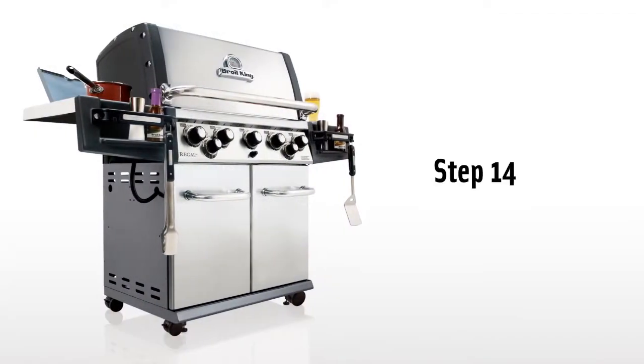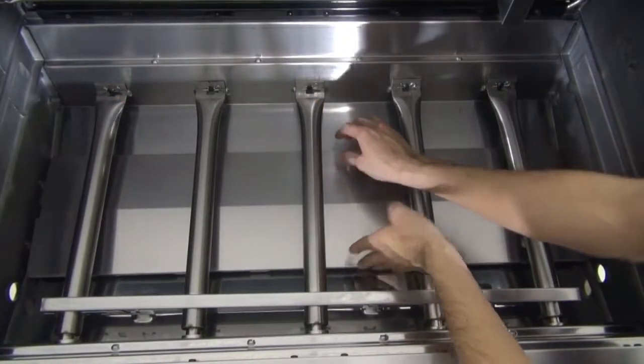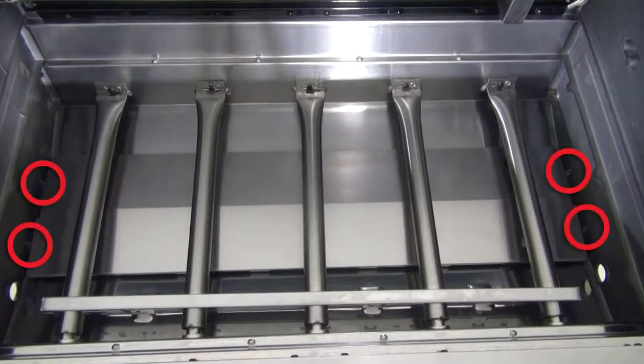Step 14. Double check that the grease shield is properly located in the cook box. There are four mounting pins to keep it in place under the burner assembly.